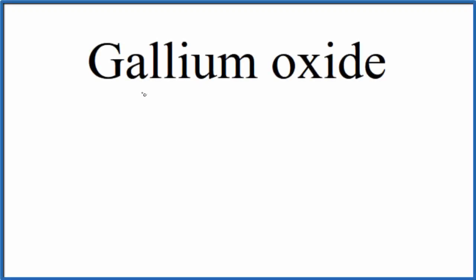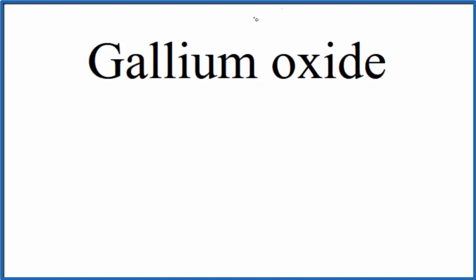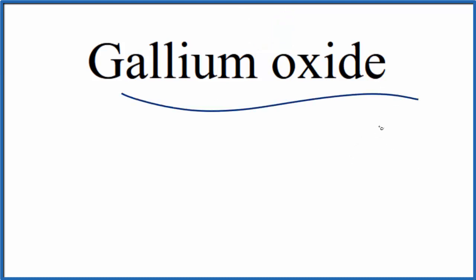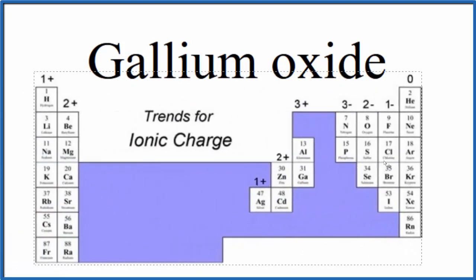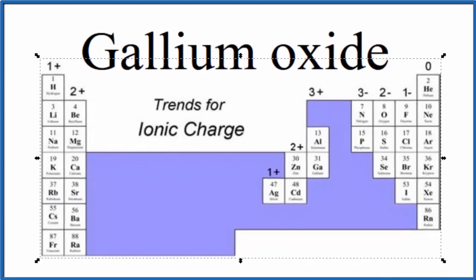In this video we'll look at the formula for gallium oxide. Sometimes you'll see it called gallium 3 oxide, or even just gallium trioxide — a few different names. We'll go with gallium oxide in this video. Let's take a look at the periodic table. Since we have a metal and a nonmetal, let's look at charge here.